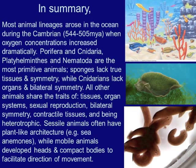In summary, most animal lineages arose in the ocean during the Cambrian, which is 544 to 505 million years ago, when oxygen concentrations increased dramatically. Oxygen concentrations increased because of the plants that made their way onto land and the algae that was in the sea. Porifera, Cnidaria, Platyhelminthes, and Nematoda are the most primitive animals.